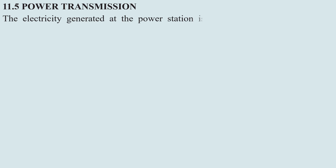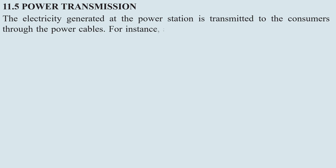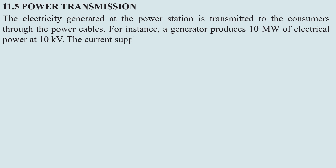The electricity generated at the power station is transmitted to customers through the power cable. For instance, a generator produces 10 MW of electrical power at 10 kV. The current supplied can be calculated as follows.